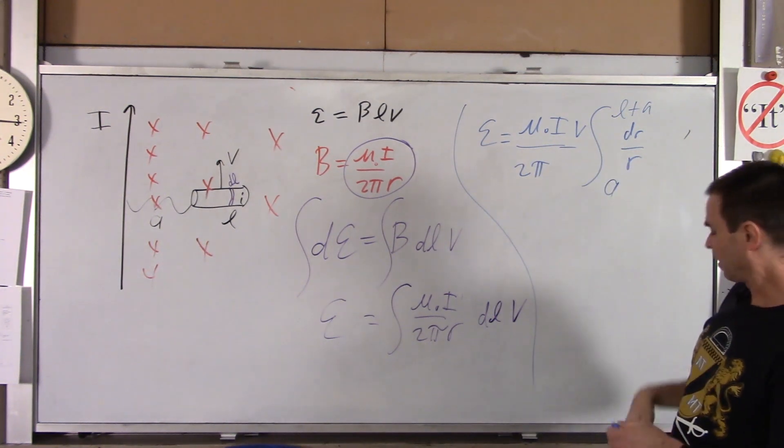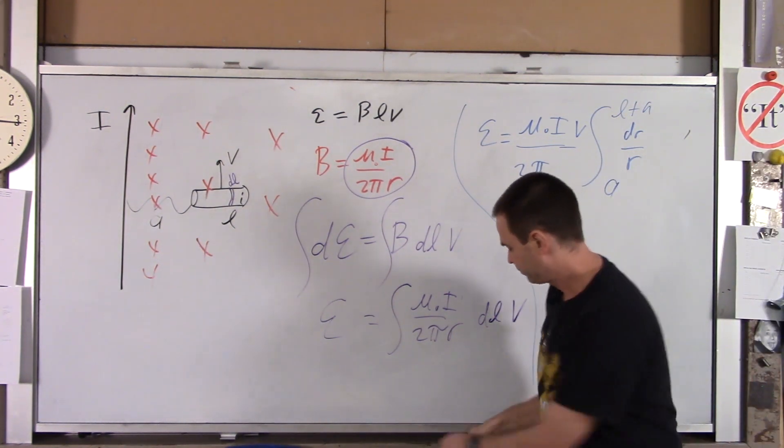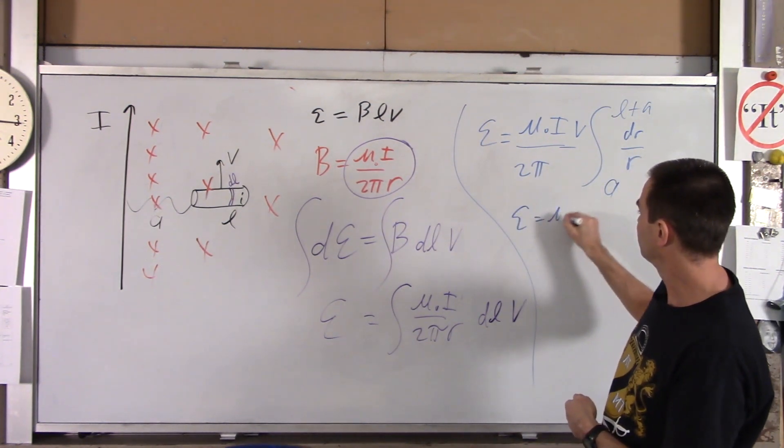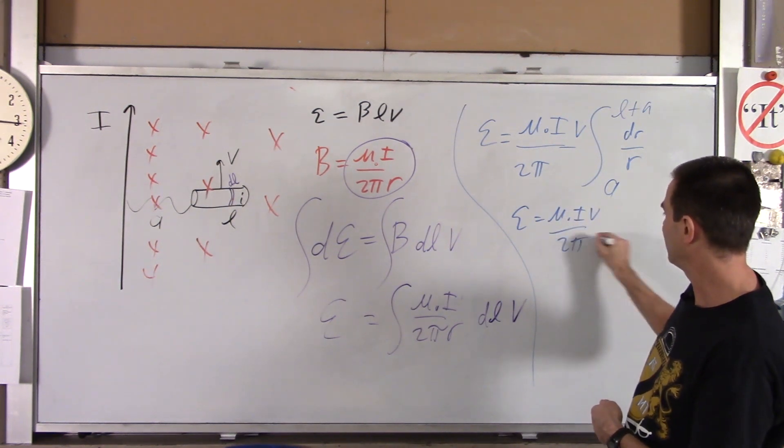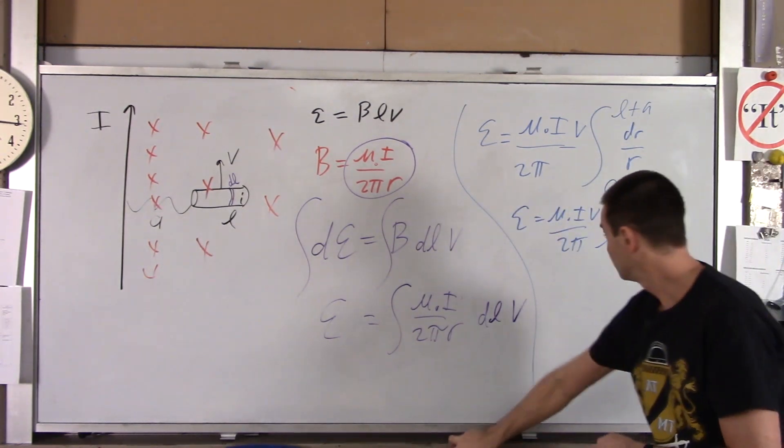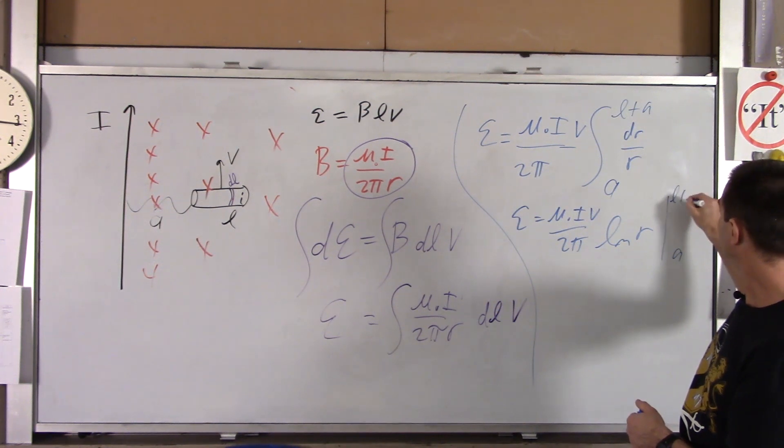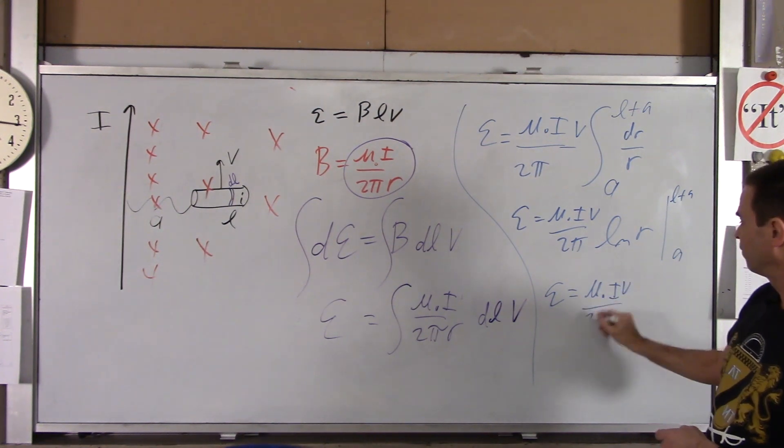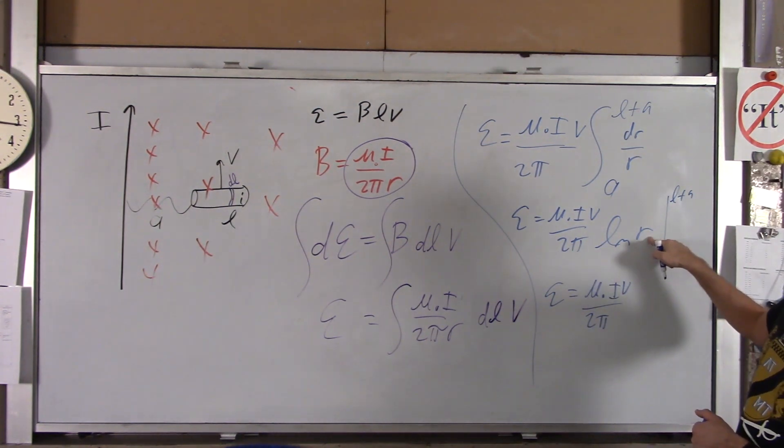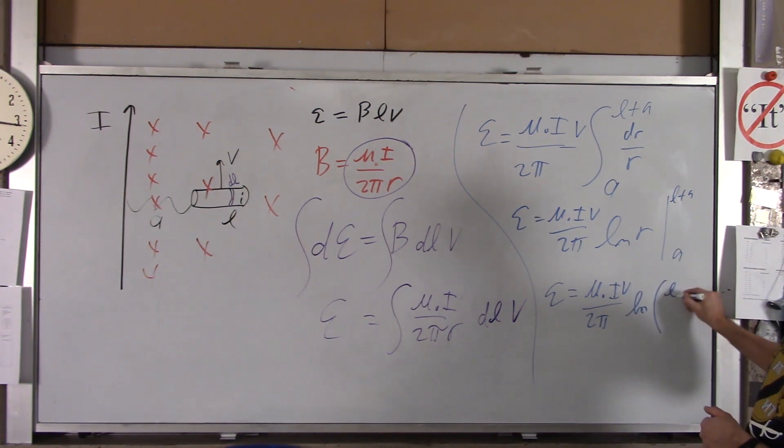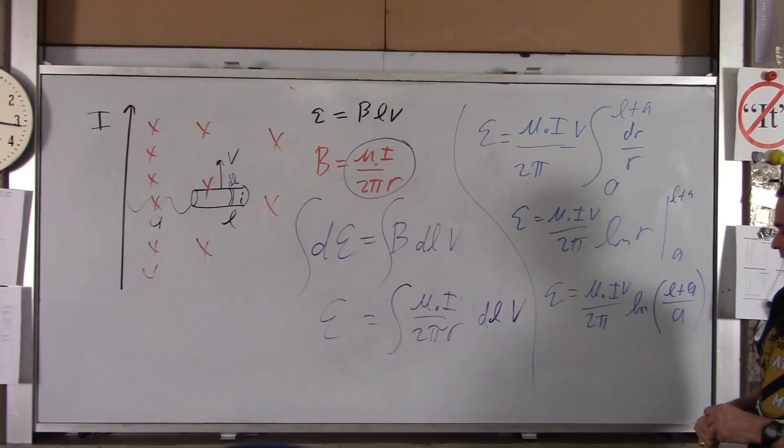So all you got to do is integrate dR over R. If you integrate dR over R, that's the natural log of R. So we've got EMF is mu naught IV over 2 pi natural log of R, evaluated from A to L plus A. And then if you plug that in, you get mu naught IV over 2 pi, the natural log of L plus A over the natural log of A. So natural log of L plus A over A. And that's your final answer. So again, that's a multi-part example.